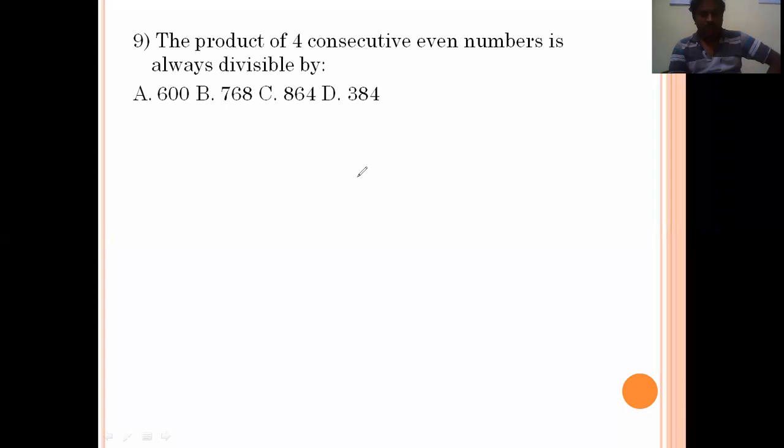The product of four consecutive even numbers is always divisible by? 2 times 4 times 6 times 8. These are the first four even numbers. 2 times 4 is 8, times 6 is 48, 48 times 8 is 384. So this 384 divides any four consecutive even numbers production. Option D is the right answer.